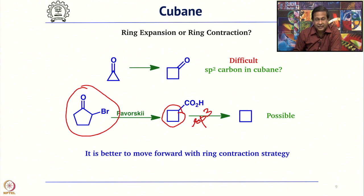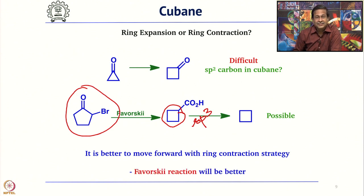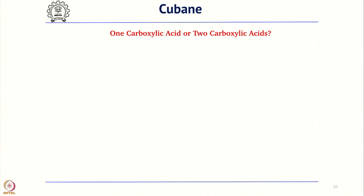It is better to go with the ring contraction strategy for the synthesis of Cubane. You have identified the Favorskii rearrangement as the key reaction to make cyclobutane, which will form cyclobutane with one carboxylic acid. Can you use only one carboxylic acid, or can you think of two carboxylic acids?